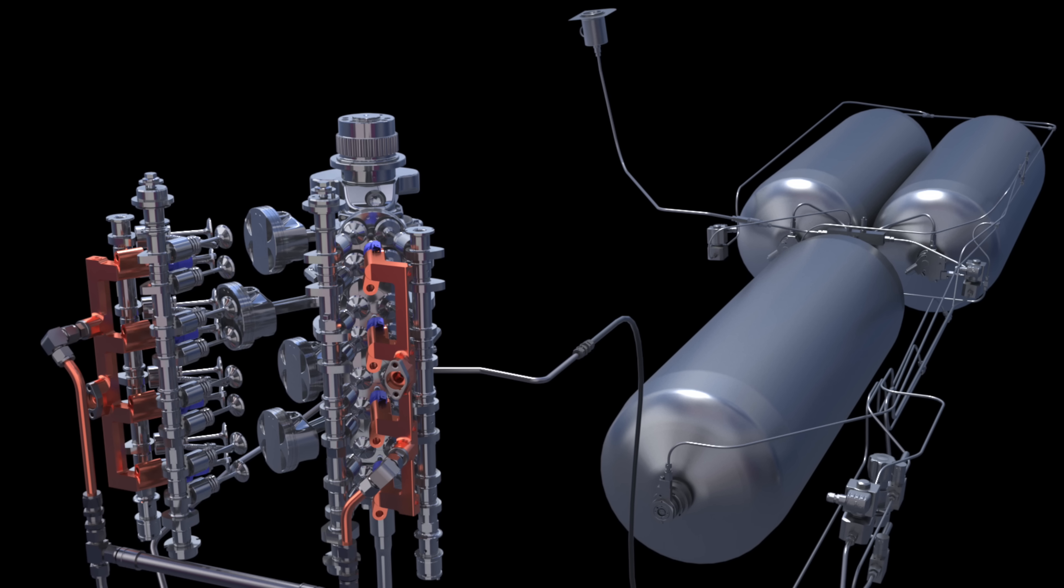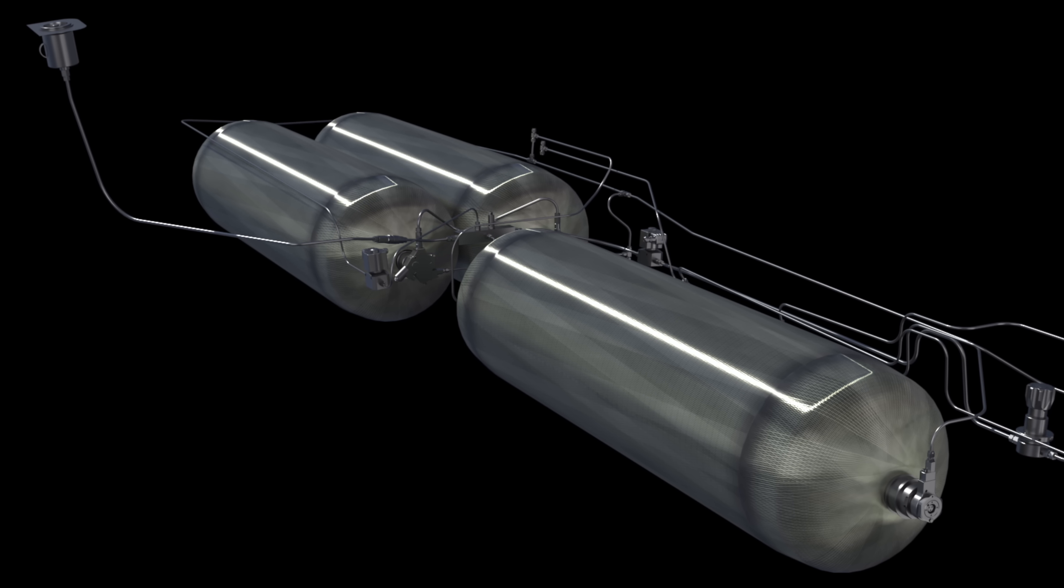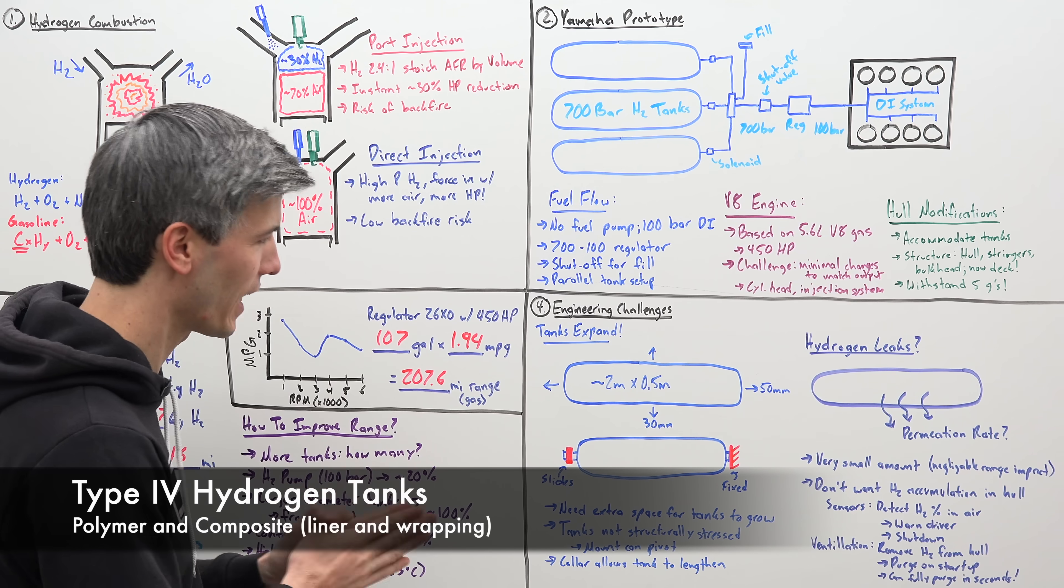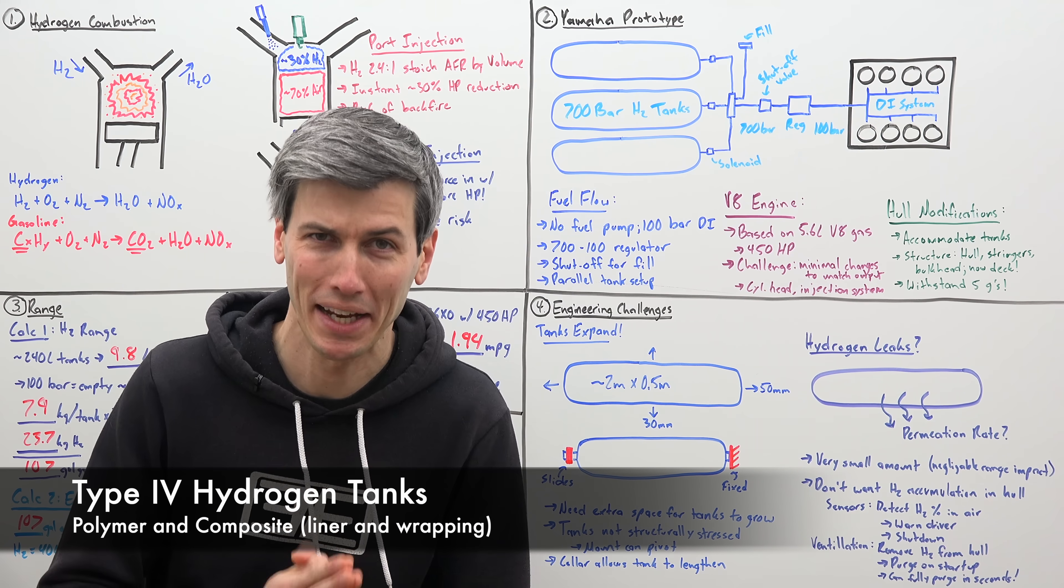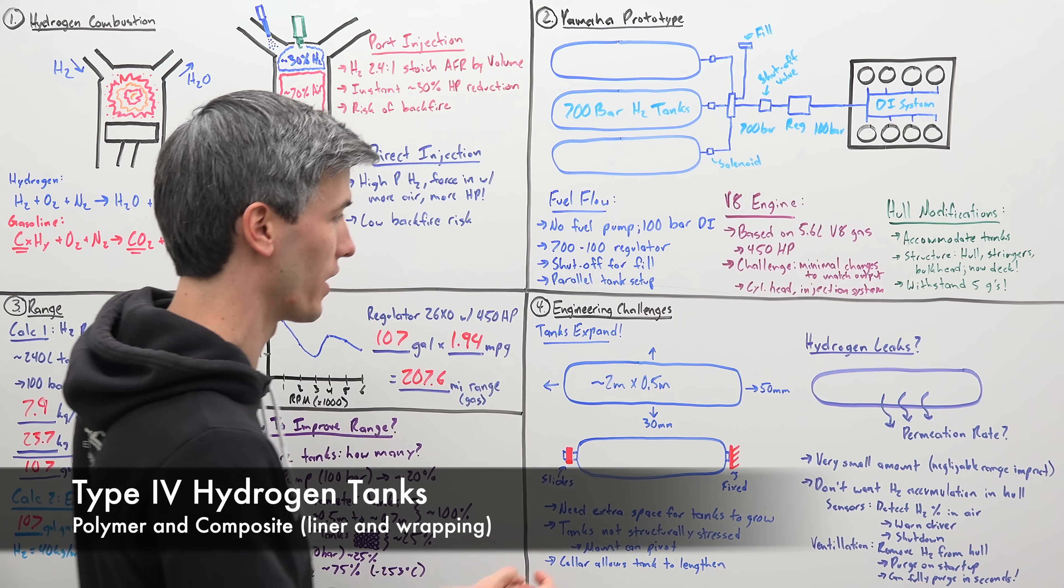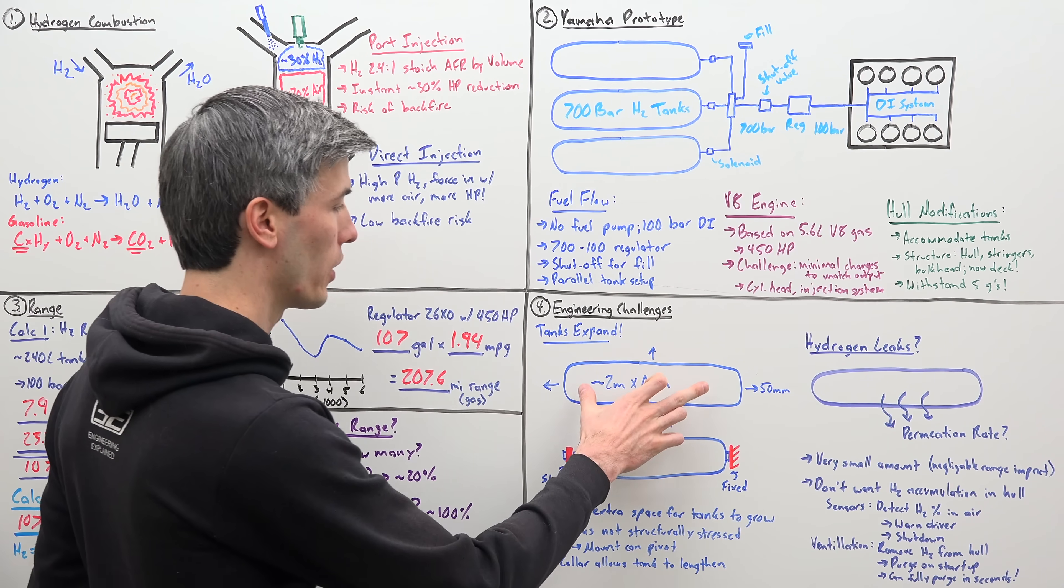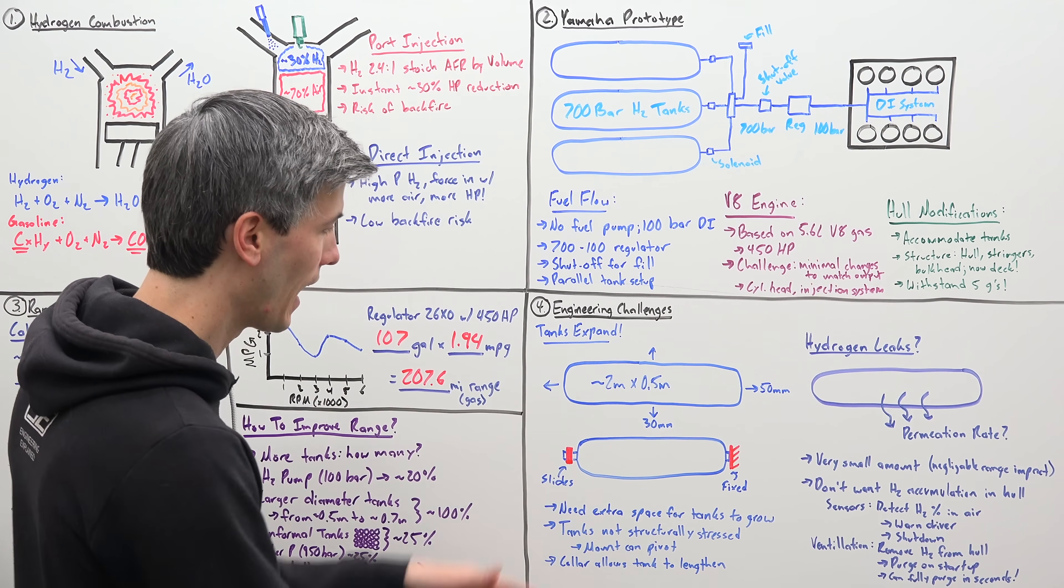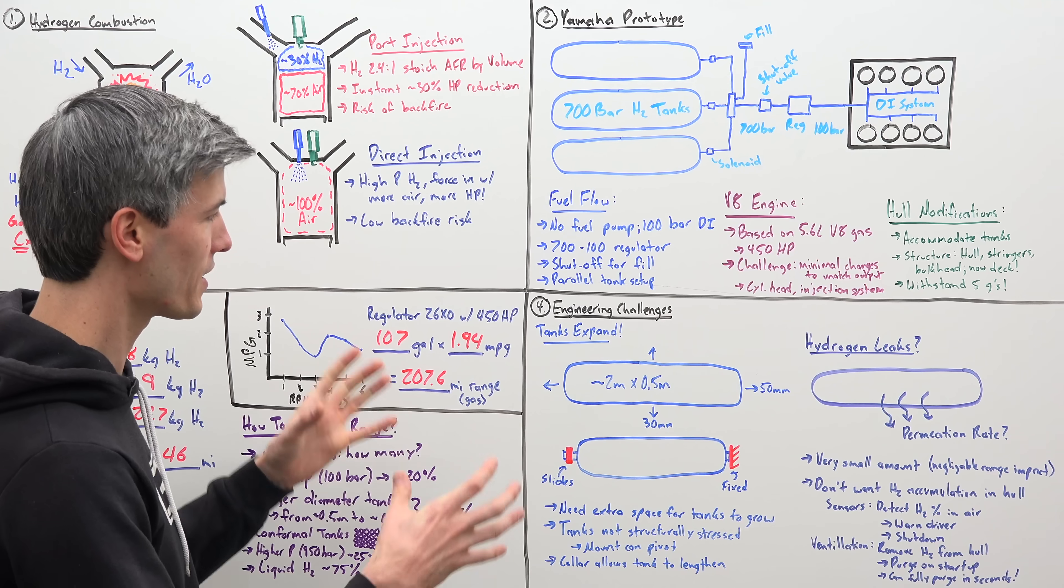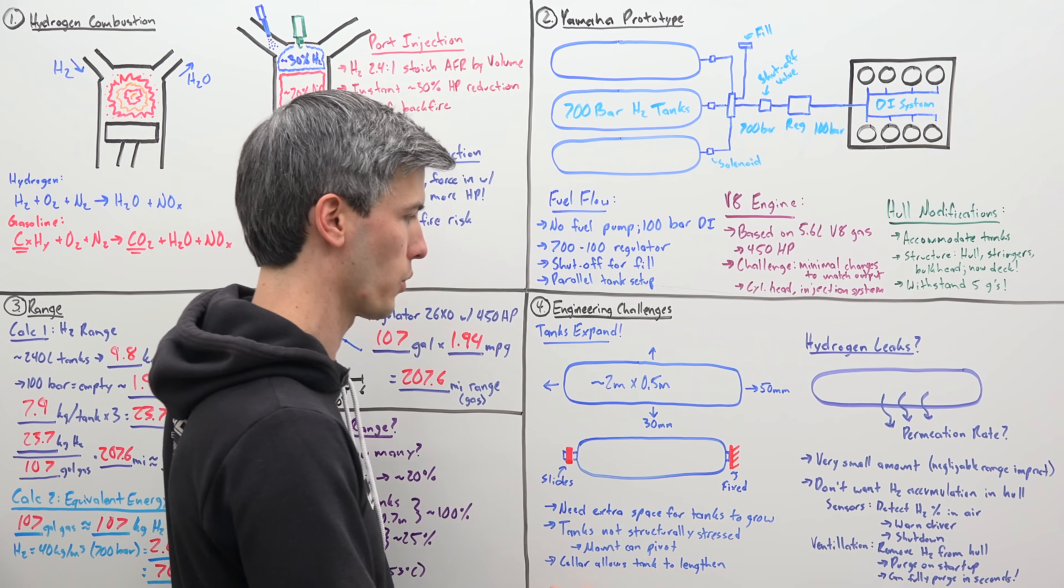There's actually some really interesting engineering required, so I want to dive a little deeper into the tanks, as well as discussing hydrogen leaks. Something I did not know about these hydrogen tanks is that they actually expand a significant amount as you pressurize them with that hydrogen. They can grow as much as about 50 millimeters, we're talking about about a 2 meter tank in length, and they can grow about 30 millimeters in diameter.